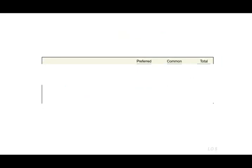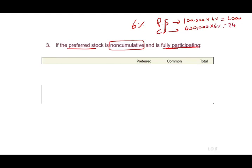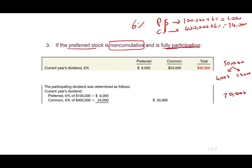Let's change the scenario again. Same data, but now let's assume the preferred is non-cumulative but fully participating. Fully participating means the common and the preferred share the same rate, which is 6% — because the common doesn't have a stated rate. So first, we pay the preferred shareholders: $100,000 par value times 6% = $6,000. Then the common shareholders participate at the same 6% rate: $400,000 times 6% = $24,000. From the $50,000, we distribute $6,000 to the preferred and $24,000 to the common in the first stage. We still have $20,000 left to distribute.